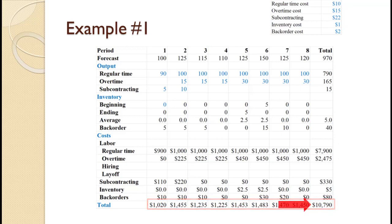This $10,790 is the total cost of the plan and is the value used to compare different aggregate plans. This is just the cost of this particular plan — there is no guarantee that any particular plan is optimal. If you found that this video helped you with your operations management problem, please consider liking the video and subscribing to the channel.